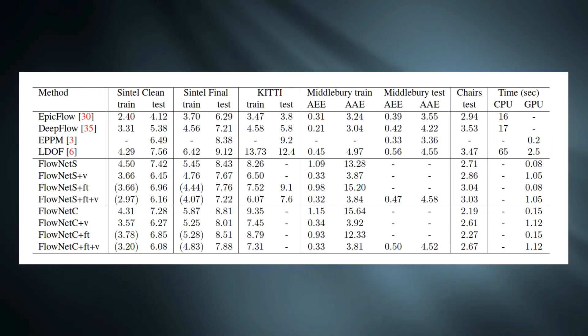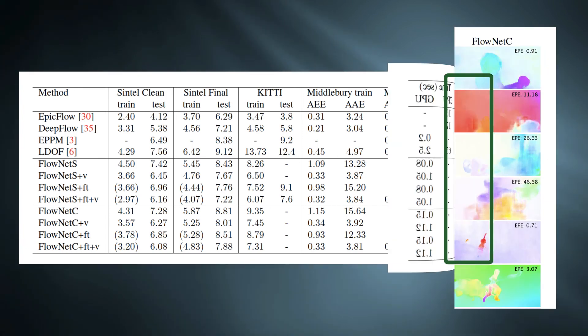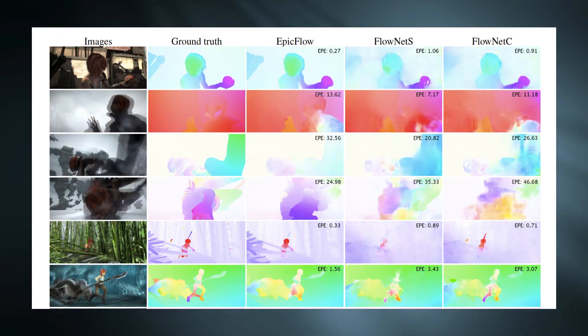Coming to the results, it is visible that both FlowNet architectures outperform all the models in Flying Chairs dataset. However, struggles in other datasets. As the networks are trained with synthetic dataset, the generalization performance should be analyzed.